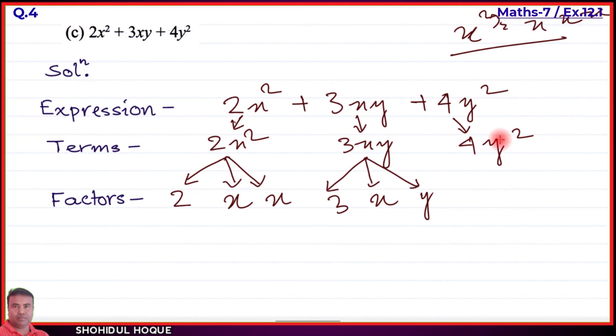For the third term 4y²: 4 equals 2 × 2, so the factors are 2, 2, y, and y. This shows all factors for part (c).